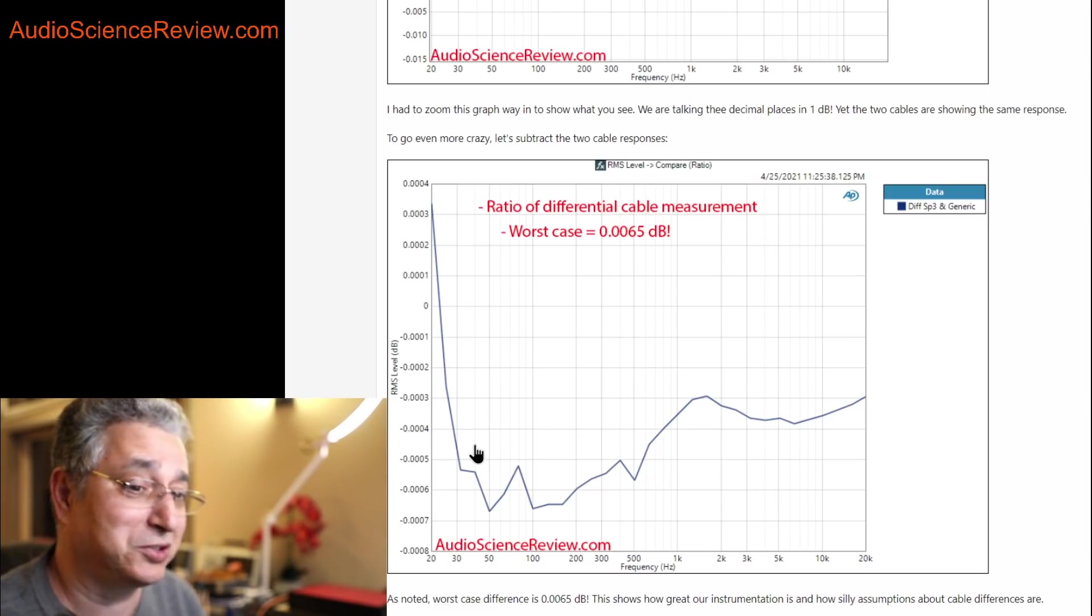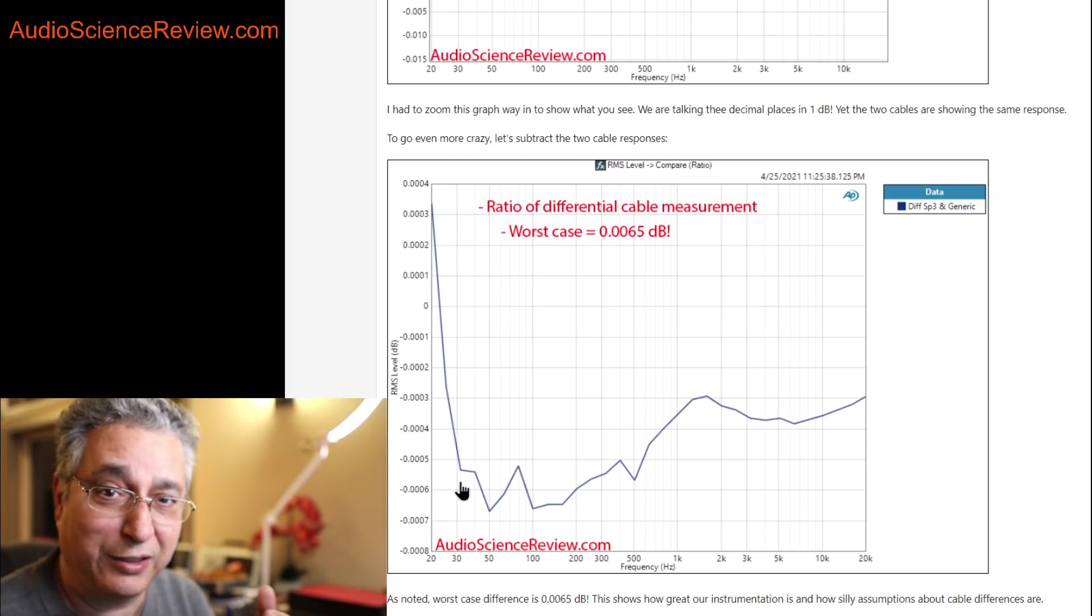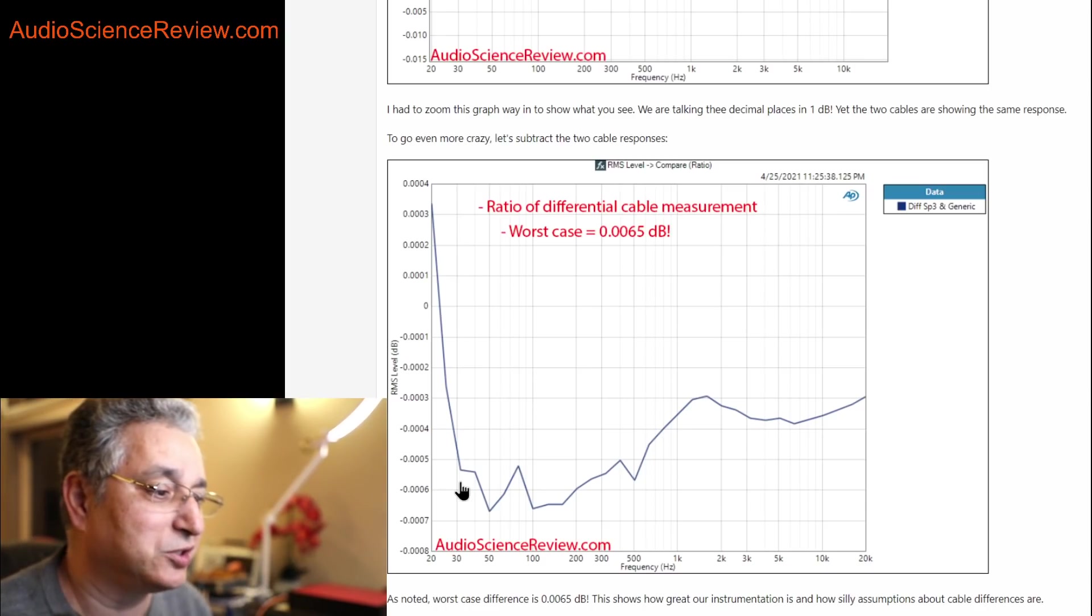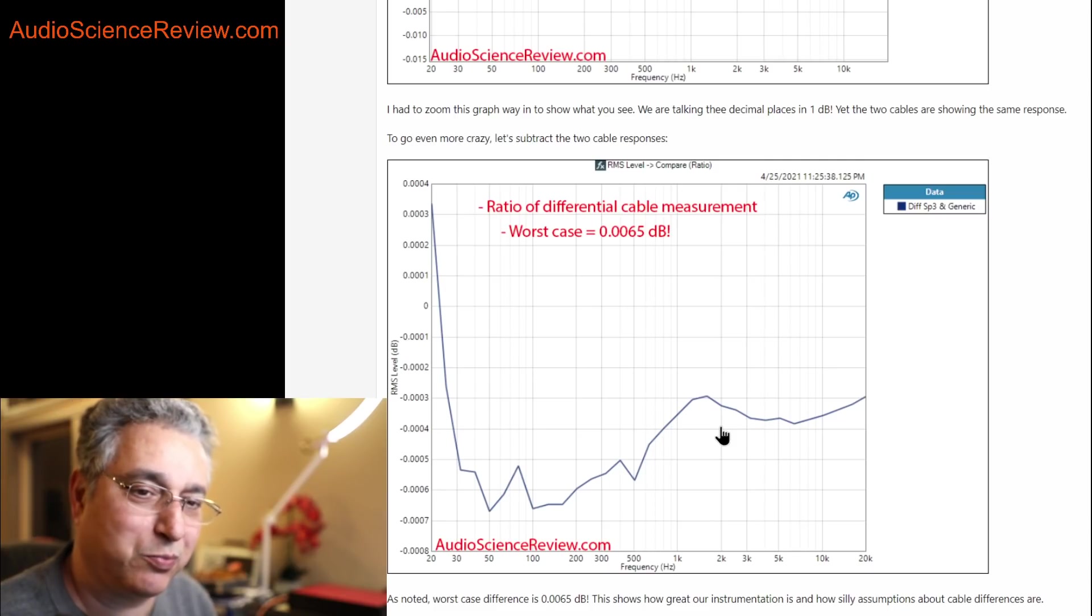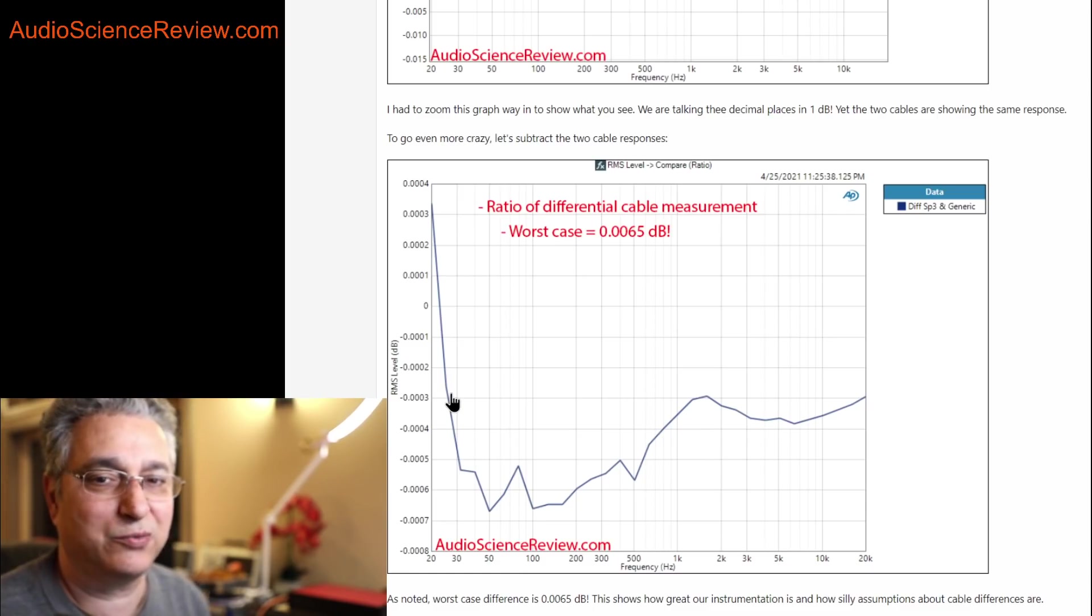But it shows you how accurate our instrumentation is. We're able to measure things as if I turn on the light and your light dims a thousand miles away. We can measure almost effects that small with our instrumentation. But no matter what we do, we just can't tease out any difference between these cables. They're just made to pass through the signal and even though we can measure some tiny differences, your hearing is just so much worse than this that it's just not even within the realm of possibility to believe that this cable makes a difference.